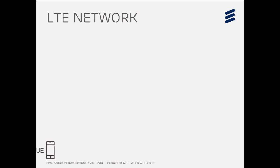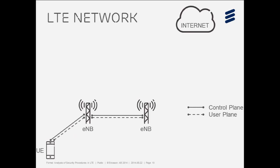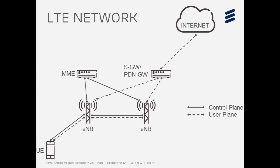The goal of LTE is to provide user equipment — this can be a mobile phone — with a stable IP address allowing it to connect to the internet, although the mobile device is moving across the network. The user equipment connects to the network through the radio access network, which is basically a set of base stations called E-NodeBs. Each E-NodeB is connected to two nodes: the MME, which manages the control plane, and the Serving Gateway, which manages the user plane.